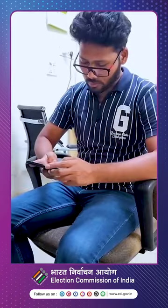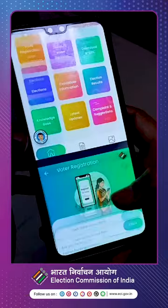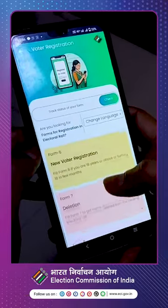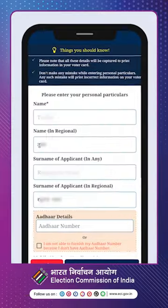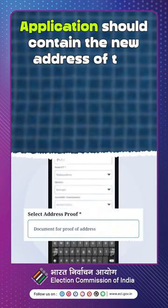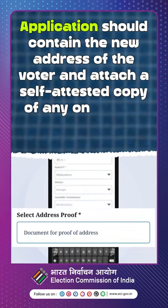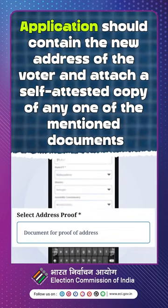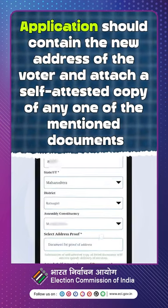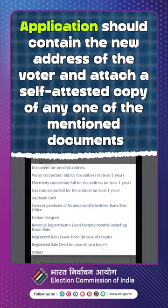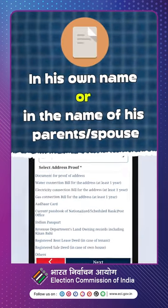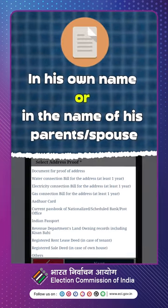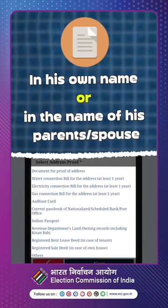You will be required to submit your basic details. The application should contain the new address of the voter, and attach a self-attested copy of any one of the mentioned documents in his own name or in the name of his parents and spouse.